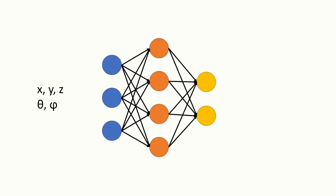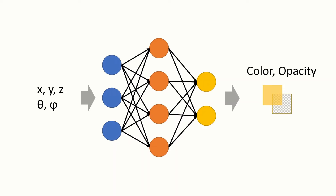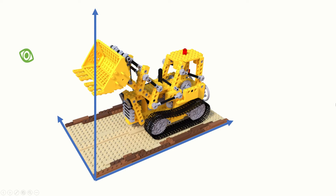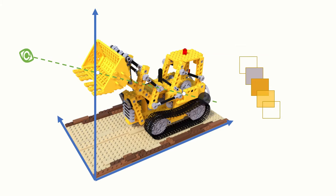Assume we have a neural network trained with all this information. We put in all these coordinates — the view angle theta and phi — to the neural network, and we expect the network to predict the color and opacity of this 3D point. Now we cast a ray through the scene, take several points and give them all to the network. It predicts the color information of all the points, and by blending all the colors with their opacity according to the distance to the ray origin, we get the pixel color of our desired viewpoint.